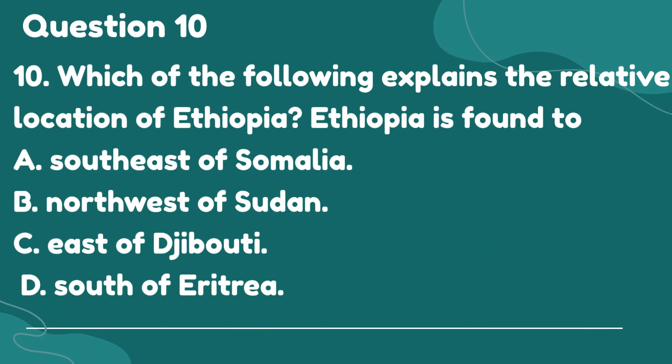Question 10. Which of the following explains the relative location of Ethiopia? Ethiopia is found to: A. Southeast of Somalia. B. Northwest of Sudan. C. East of Djibouti. D. South of Eritrea.